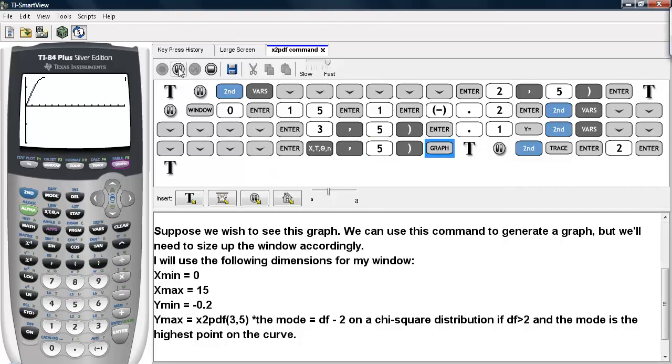And there is our curve, that is what a chi-square distribution looks like with 5 degrees of freedom.